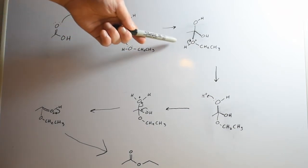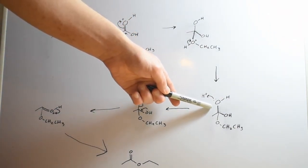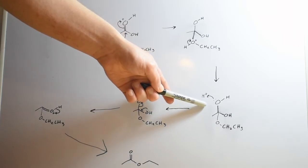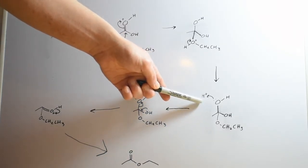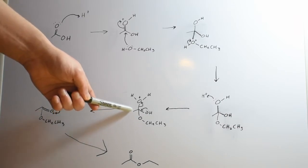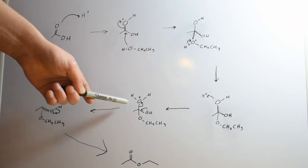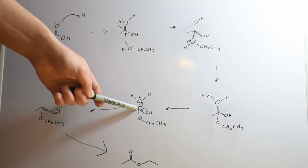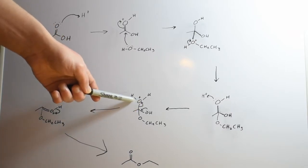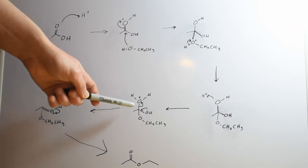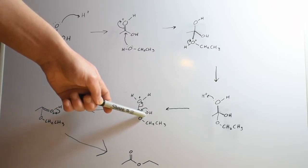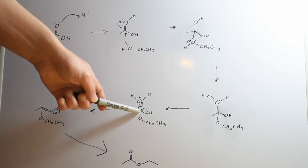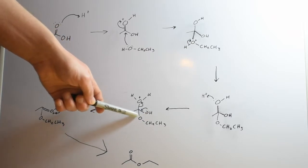This proton can then go to protonate one of the hydroxyl groups of the intermediate and this ends up with a molecule which has a perfect leaving group of water. So the electrons from this bond go to separate off the water molecule which leaves as a leaving group, and two of the electrons from this hydroxyl group here go to form a double bond which will reform a carbonyl.